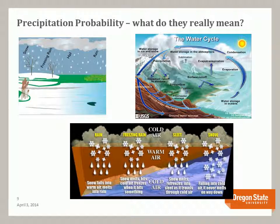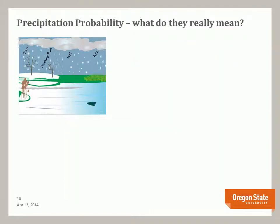The other topic that came up in a couple conversations was precipitation probability — what does it really mean? We might cover it again later in the class, but since it was part of the topic I'll do it right now. Precipitation includes whether it's solid water or liquid water — it's a measure of any type of water material that falls from the sky.